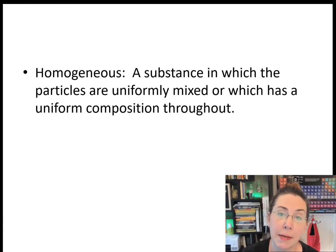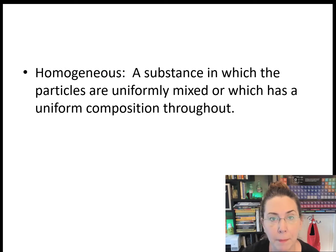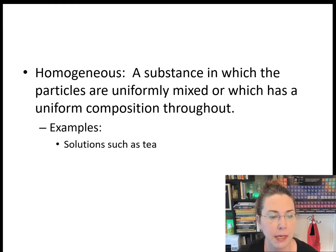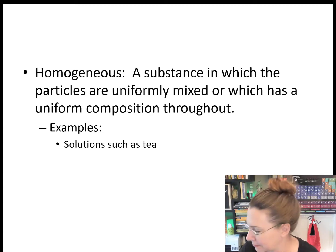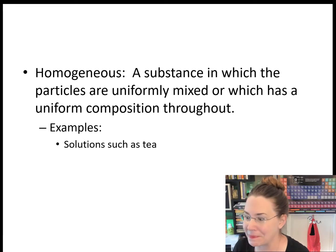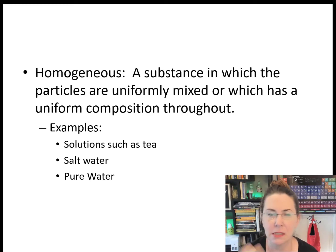We've got a couple of different types of matter, and these are terms that are going to be really important to us. The first one is homogeneous. A homogeneous substance is any substance in which the particles are completely uniformly mixed, or which has a uniform composition throughout the entire substance. Examples include a solution like my tea — all the particles of tea in the water are evenly mixed. Salt water would also be an example of a homogeneous mixture. Pure water would also be homogeneous, but it's not a mixture — it's one substance with uniform composition throughout.